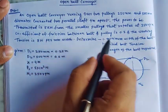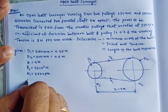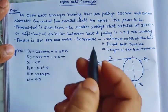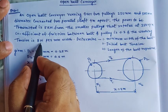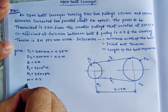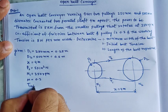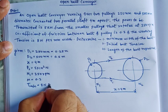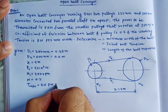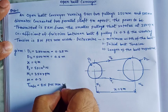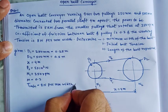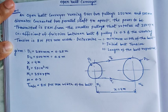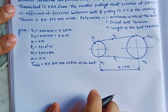The coefficient of friction between belt and pulley is mu equals 0.3. The safe working tension is 8 Newton per millimeter width of the belt. Now, solution.